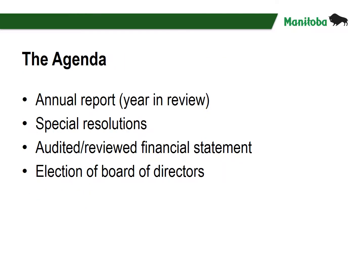The main items on the agenda are: the Annual Report, which is often circulated in written form and then a summary is presented at the meeting; any special resolutions, which may involve changes to the constitution or bylaws; the audited or reviewed financial statement, which will usually include a comparison to at least one previous year and to the budget, and may also include a proposed budget for the coming year; and the election of the Board of Directors and possibly officers or executive, which is usually the final item of business.